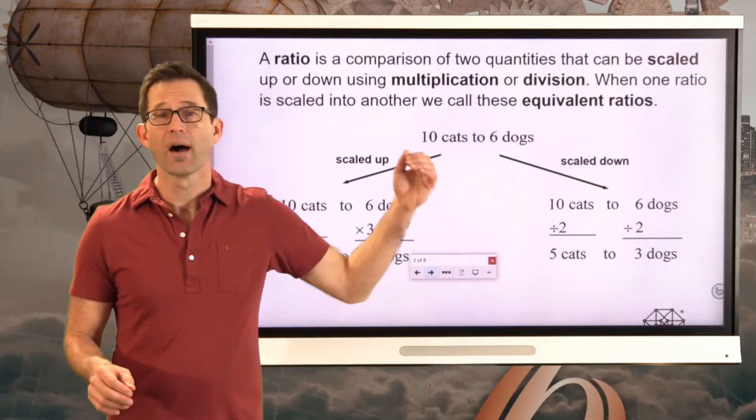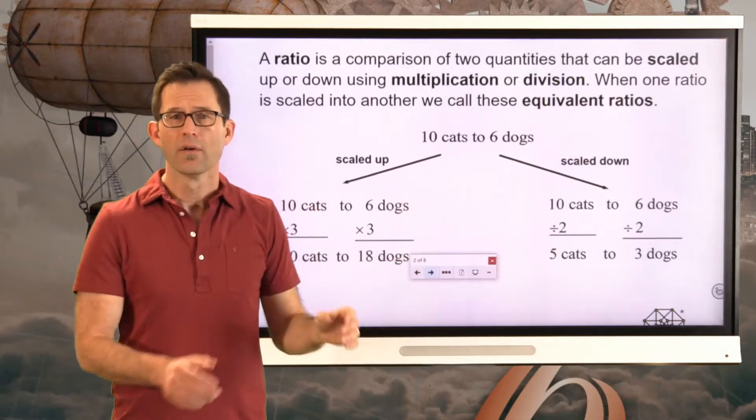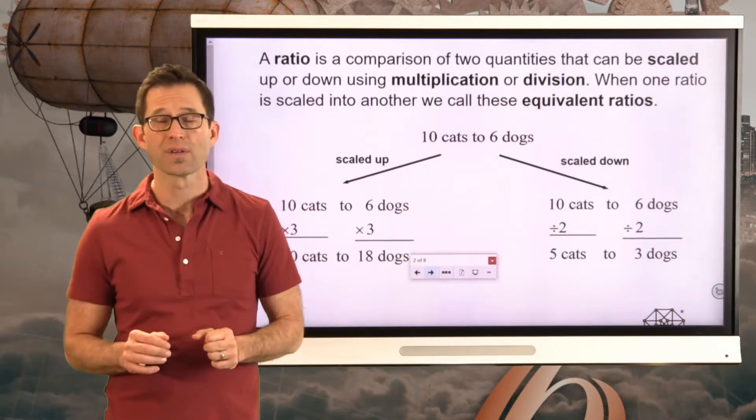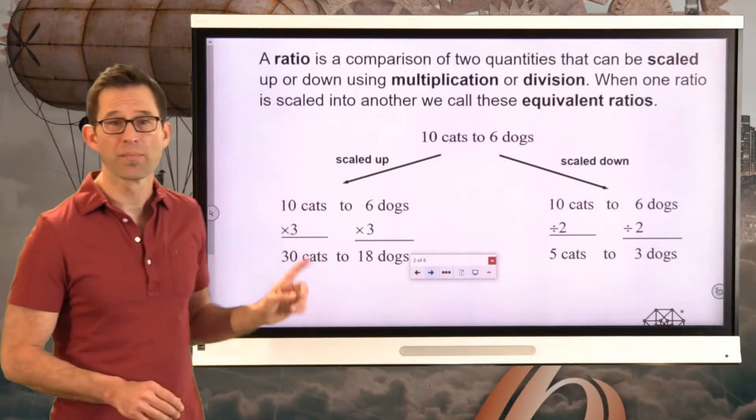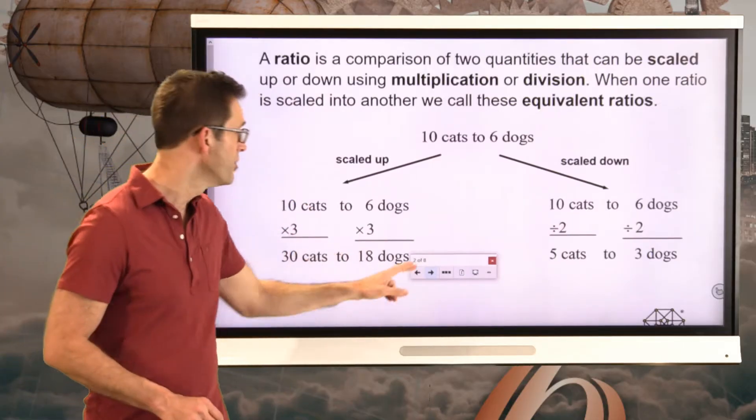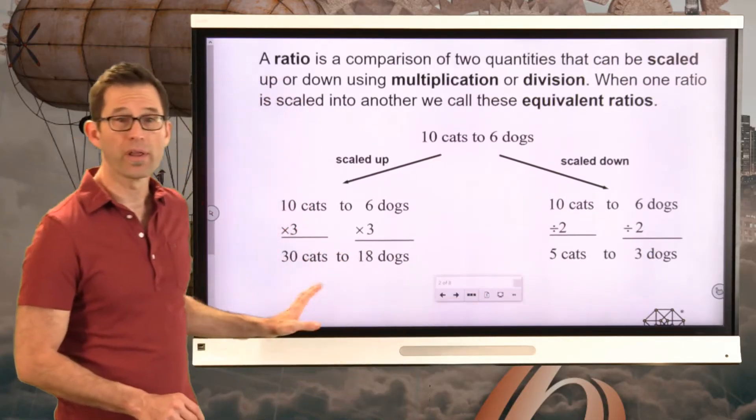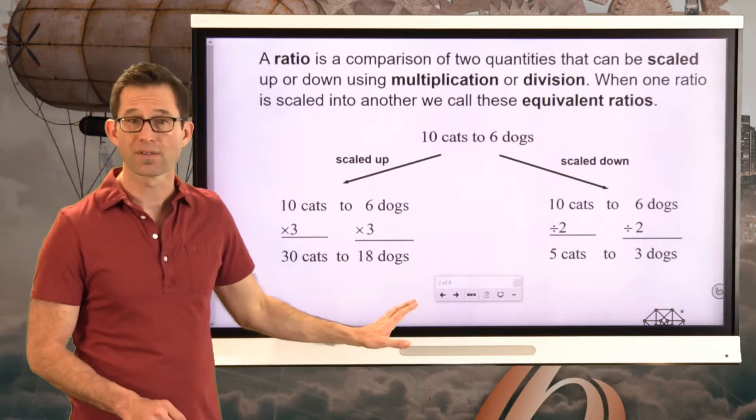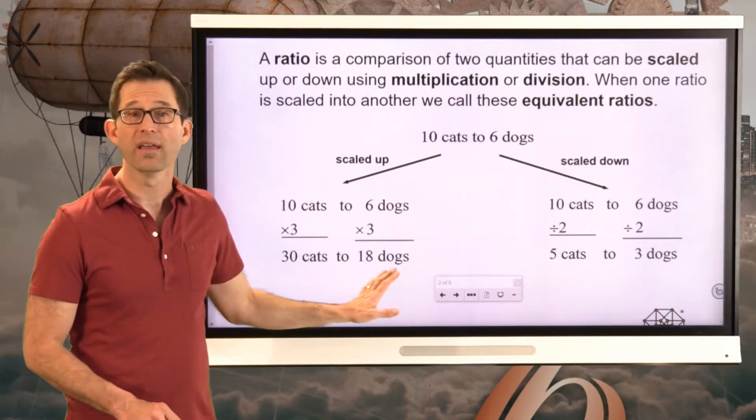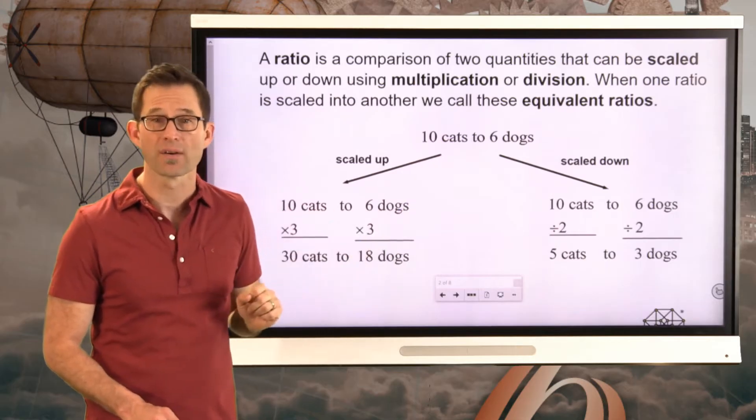So let's just say I had a ratio of 10 cats to 6 dogs. For every 10 cats there's 6 dogs. Well, I could scale that up by multiplying both of those numbers by 3 and I would then have 30 cats to 18 dogs. And that 30 cats to 18 dogs would be equivalent to 10 cats to 6 dogs.